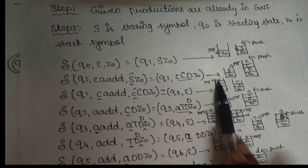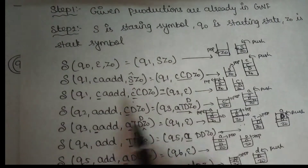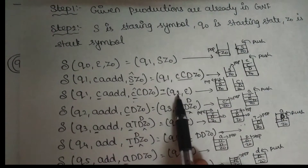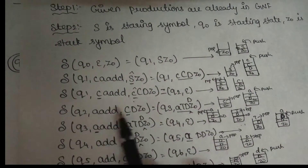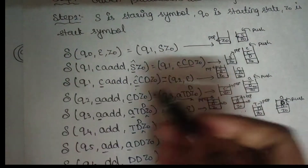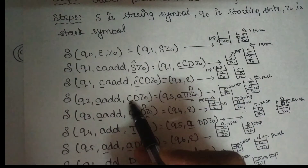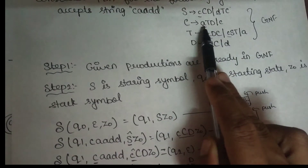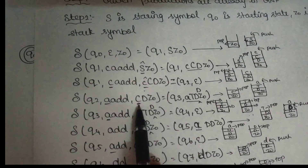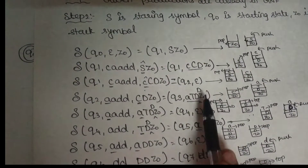What is remaining? Capital C, D, Z-naught. Capital C, D, Z-naught in state Q2. The remaining input strings are A, A, D. The top of the stack is a non-terminal, so there is a production rule — we push the value. We push A, T, D — because the input string is A. I push A, T, D. Already T, D, D, Z-naught — the value is pushed. Top of the stack: C is popped and A, T, D, Z-naught is the stack.